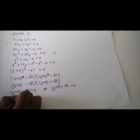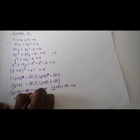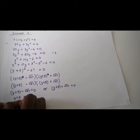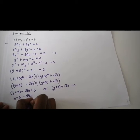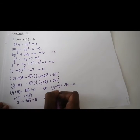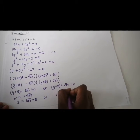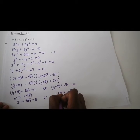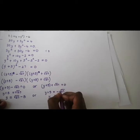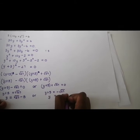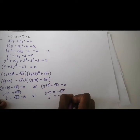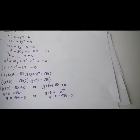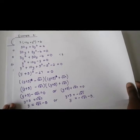So y plus 5 equals root 27, therefore y equals root 27 minus 5. Or y plus 5 equals negative root 27, so y equals negative root 27 minus 5. And there you go.